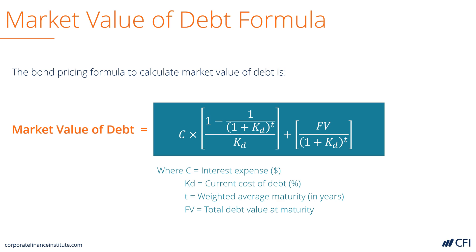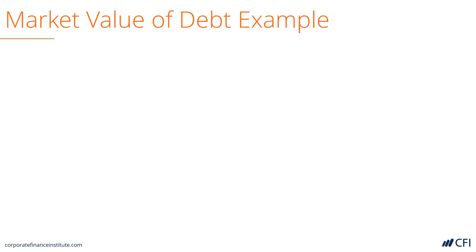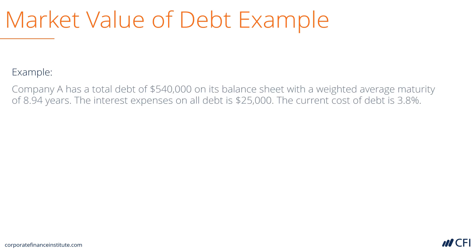Now let's plug in some numbers so we can make sense of this formula. A company has $540,000 of debt on its balance sheet. The weighted average maturity is 8.94 years. Interest expense on the income statement is $25,000. And the company has also determined that if it were to raise new debt, the blended cost of that new debt would be at 3.8%. So let's calculate the market value of this company's debt.